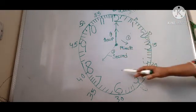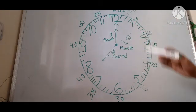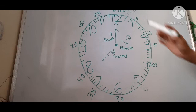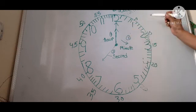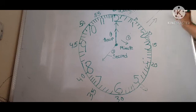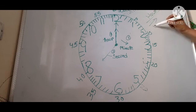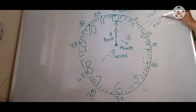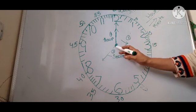Now let me introduce the hands. How many hands are there in our clock? There are 3 hands. One is a long hand and one is a small hand. The long hand is the minute hand and the small hand is the hour hand. And there is a very small thin hand — it is the second hand.